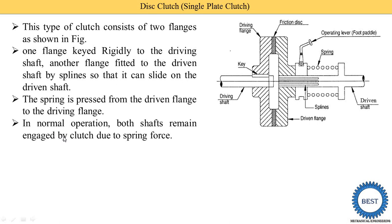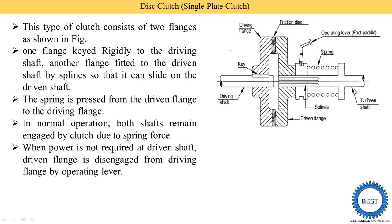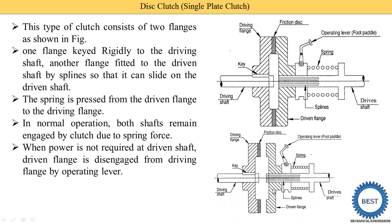In a vehicle when we are not pressing the clutch, it is called the normal position. During normal position, both the driving shaft and driven shaft are in engaged position and they are transferring the power from the driving shaft to the driven shaft. When we press the clutch — in a bike by hand, in a four-wheel vehicle by foot — the spring is compressed and the driving shaft and driven shaft are disengaged. As seen in the second image, when we press this lever, the driven flange is disengaged from the driving flange and power is not transmitted. This is called the disengaged position of the driving and driven shaft.